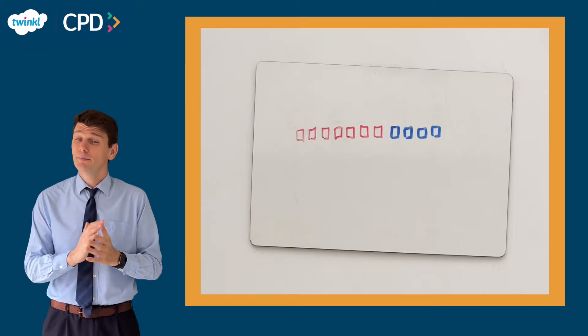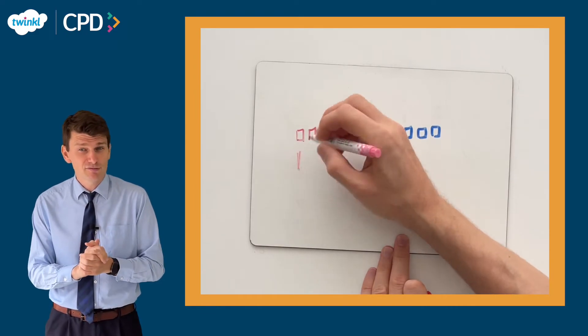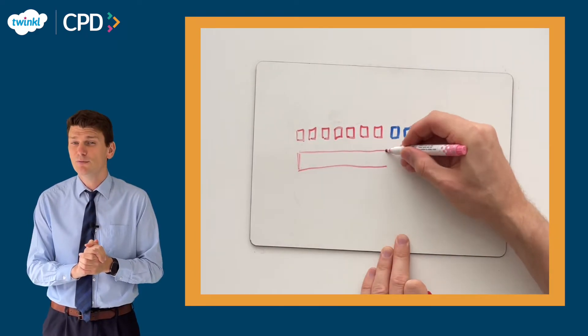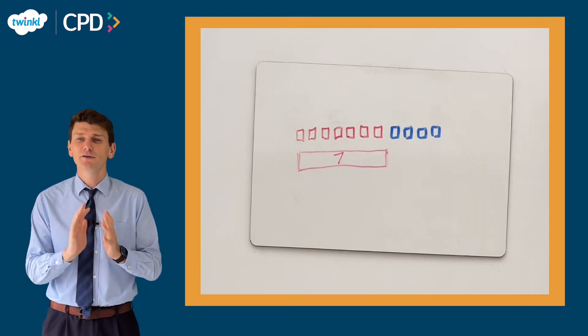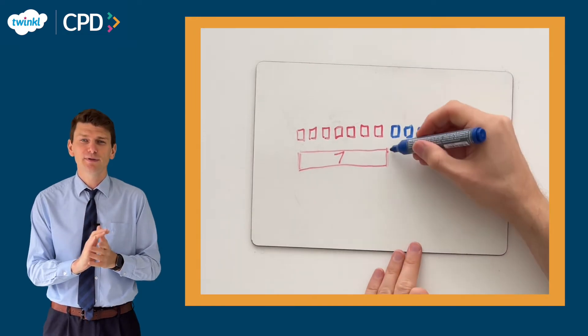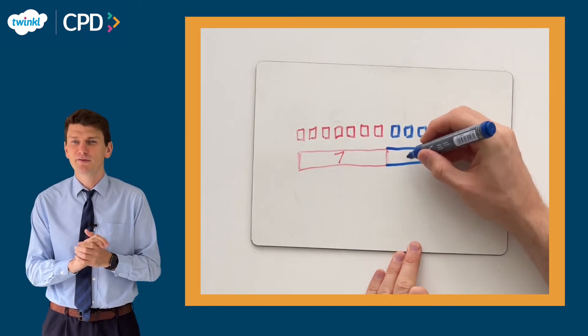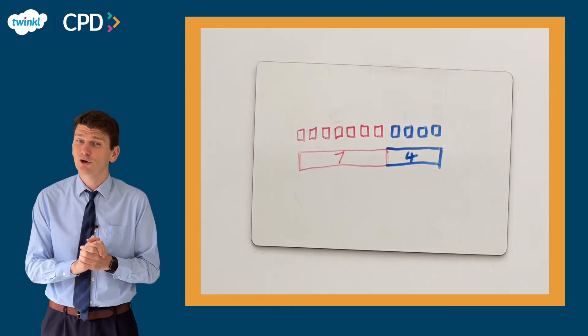The bar model is often used as a pictorial representation as it can be used to show proportions. Children will often use bar models when they have become more comfortable drawing pictures of the manipulatives they were using in the concrete stage.